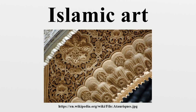Islamic art has very notable achievements in ceramics, both in pottery and tiles for walls, which in the absence of wall paintings were taken to heights unmatched by other cultures. Early pottery was often unglazed, but tin-opacified glazing was one of the earliest new technologies developed by the Islamic potters. The first Islamic opaque glazes can be found as blue-painted ware in Basra, dating to around the 8th century. Another significant contribution was the development of stone-paste ceramics, originating from 9th century Iraq. The first industrial complex for glass and pottery production was built in Raqqa, Syria, in the 8th century. Other centers for innovative pottery in the Islamic world included Fustat, Damascus and Tabriz. Lustrewares with iridescent colors may have continued pre-Islamic Roman and Byzantine techniques, but were either invented or considerably developed on pottery and glass in Persia and Syria from the 9th century onwards.